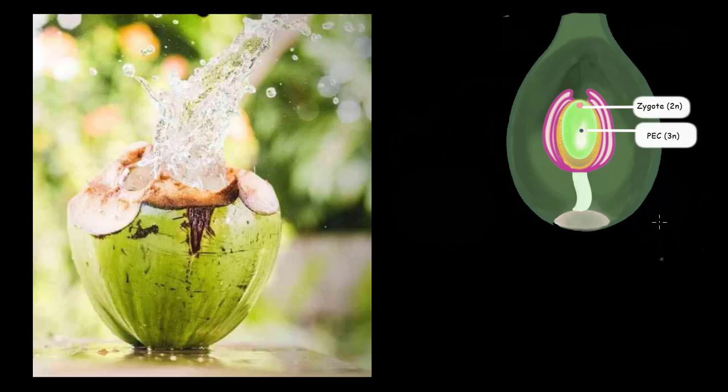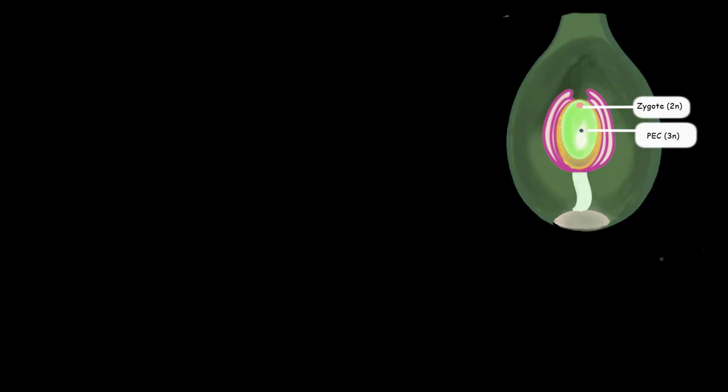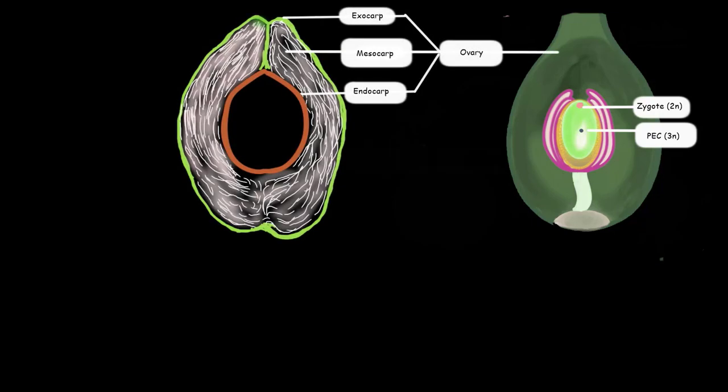This is the most interesting part as we see how the ovary slowly converts into a coconut. This is a picture of a coconut cut in half longitudinally. Like any fruit, the ovary gives rise to three distinct parts: the outermost exocarp, the inner husky mesocarp which is whitish in coconut, and the inner stony hardest part called the endocarp. All three parts feel and look very different, yet they are formed by the ovary alone.